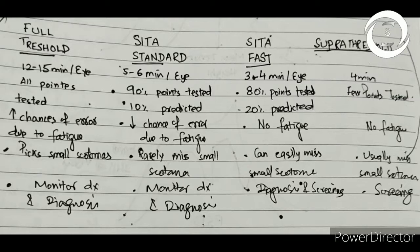On the other hand, SITA works on predictability. If you pick a point with low threshold, it will not be checked again. If you miss a point, it will be tested again with increased stimulus, so it is a quick test.